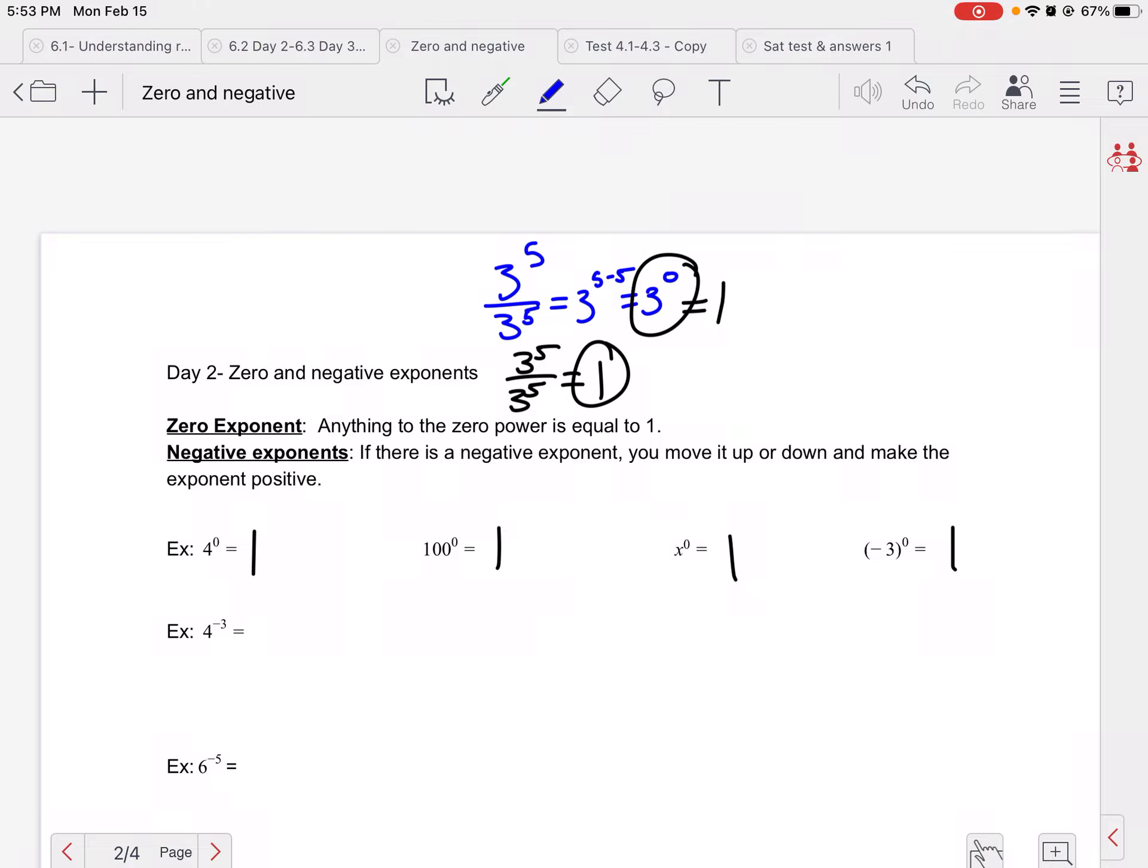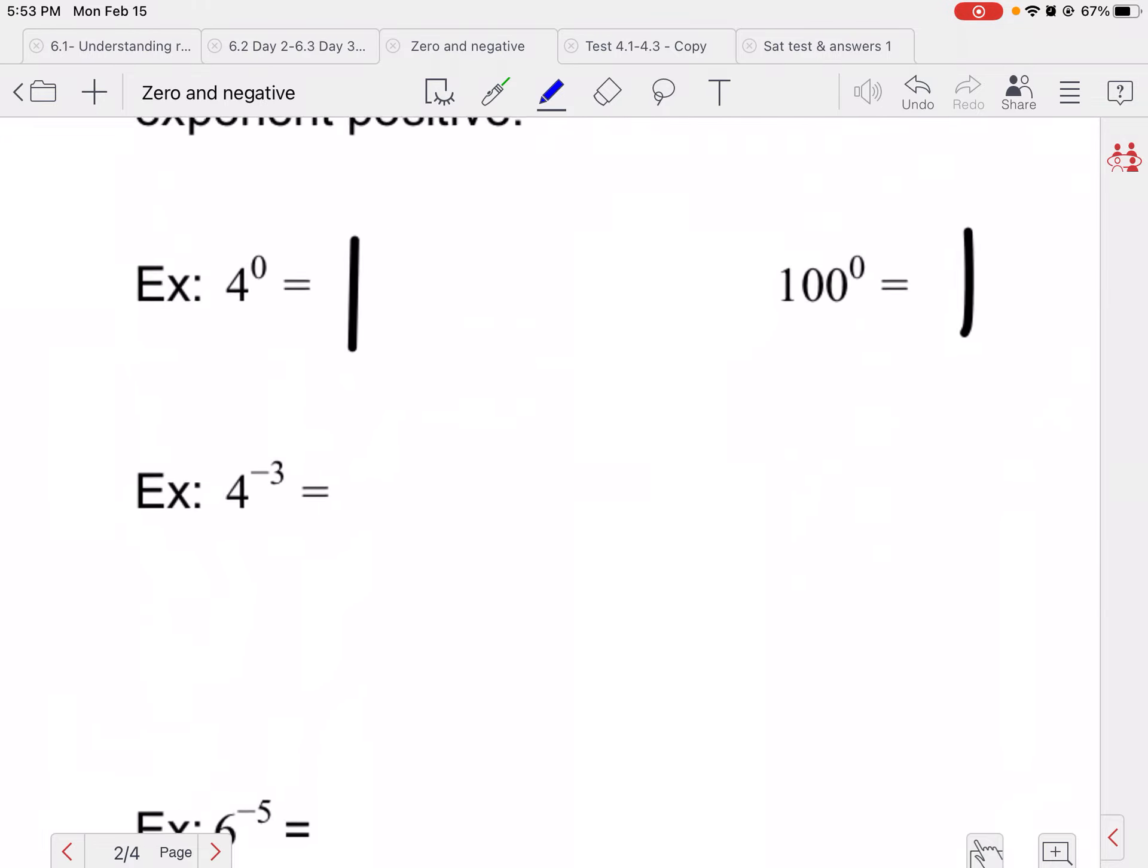So please, please, please, do not put your answer to zero, because that's what most students do. Anything to the zero power is one whole, and that can be tricky for some people.